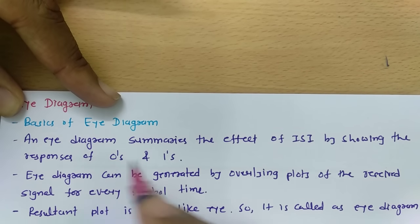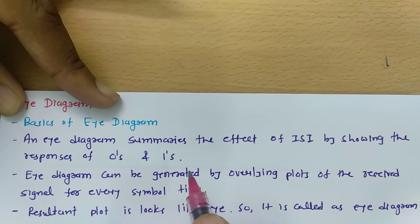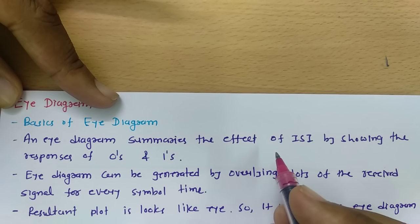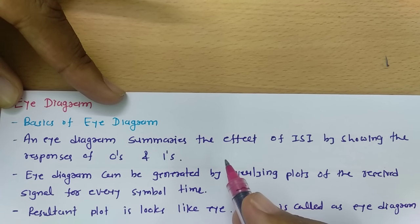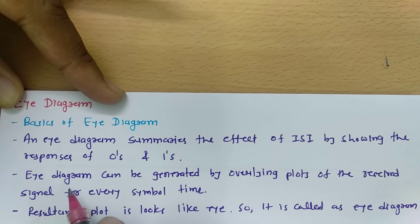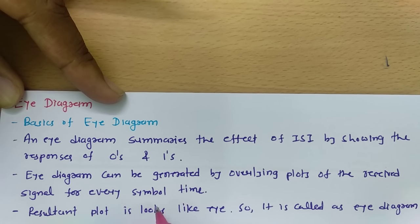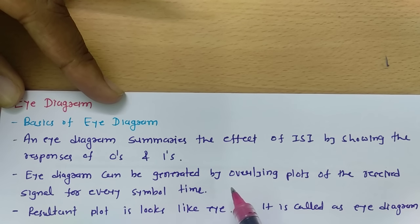The eye diagram summarizes the effect of inter-symbol interference (ISI) by showing the response of zeros and ones. The eye diagram can be generated by overlaying plots of the received signal for every symbol time period T_B, overlaying them on each other.